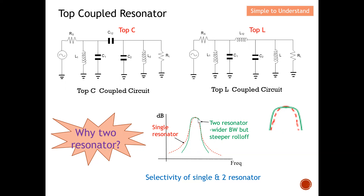We use two resonators in order to achieve a steeper roll-off factor. However, using two resonators results in a slightly wider bandwidth. Looking at the zoomed portion, you can see the bandwidth for the dual resonator slightly increases compared to the single resonator. This increase can simply be neglected, and therefore two resonators are always preferred because of the steeper roll-off factor.